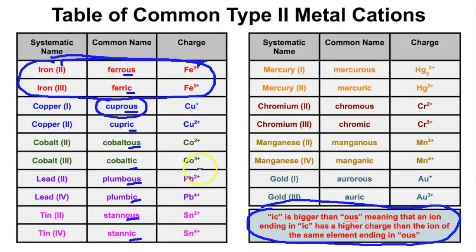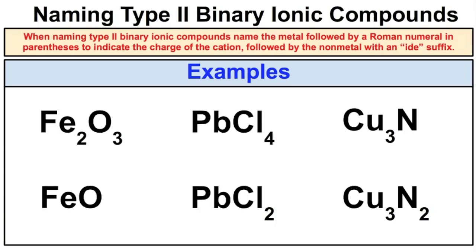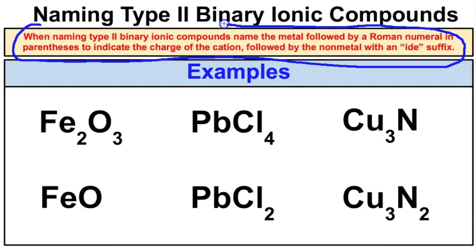I'd recommend pausing the video to familiarize yourself with the type 2 cations and memorize their charges so writing formulas and naming them will be easier. When naming type 2 binary ionic compounds, simply name the metal followed by a Roman numeral in parentheses to indicate the charge of the cation, followed by the nonmetal with an -ide suffix. I'll mostly use the systematic name but will also show the common name.